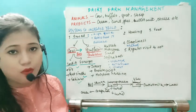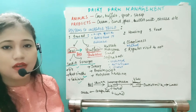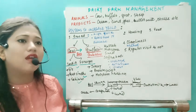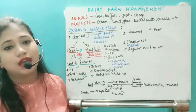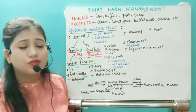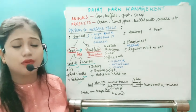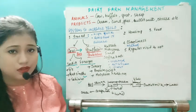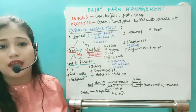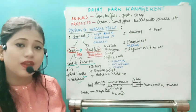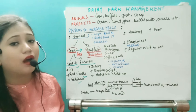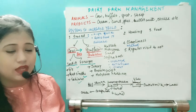Diseases like pox and rinderpest were once like a pandemic — in the 1950s, crores of cows and buffalos died. Mass immunization provided by the government helped conserve the cattle herd. So proper immunization is a must.